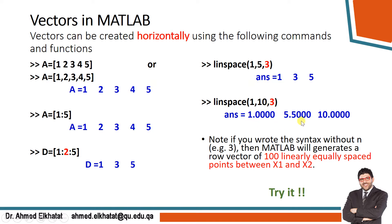For instance, linspace(1, 10, 3) gives one, 5.5, and ten — equally spaced. If you don't specify the number of points, linspace automatically creates 100 equally spaced points. So from one to ten it will be divided into 100 vectors.